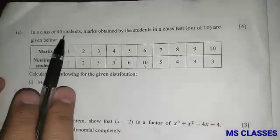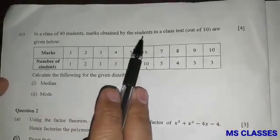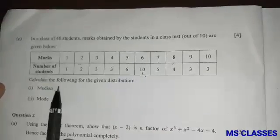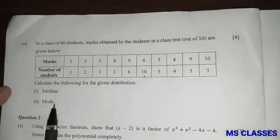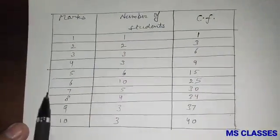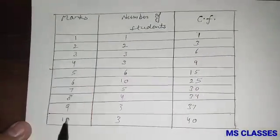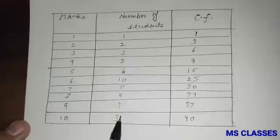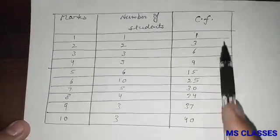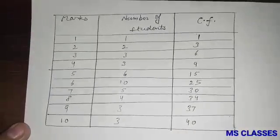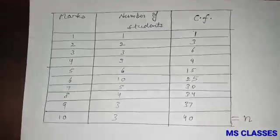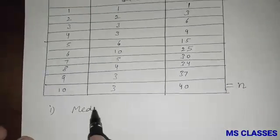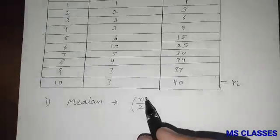Part C: in a class of 40 students, marks obtained in a class test out of 10 are given. Calculate the median and mode for the given distribution. Here is the required table showing marks and number of students, along with the cumulative frequency. N equals 40.